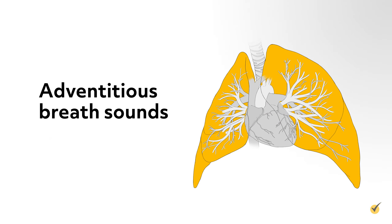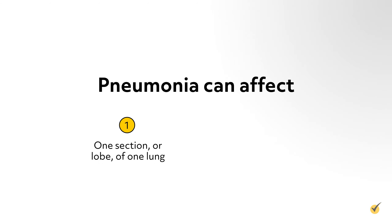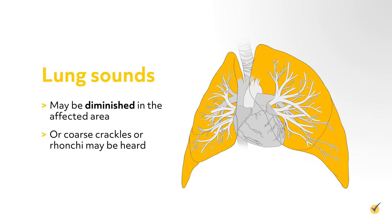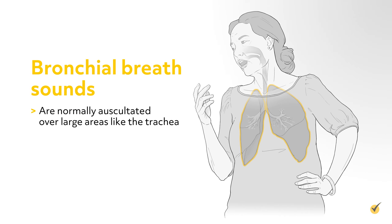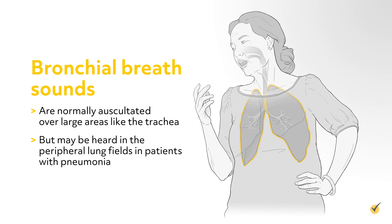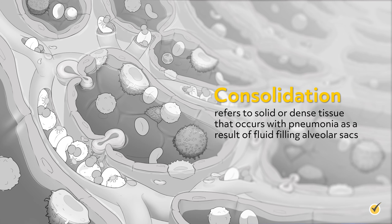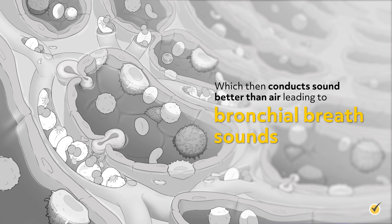Adventitious breath sounds may be auscultated in patients with pneumonia. Pneumonia can affect just one section or lobe of one lung, or multiple lobes of one or both lungs. Lung sounds may be diminished in the affected area, or coarse crackles or ronchi may be heard. Bronchial breath sounds are normally auscultated over large areas like the trachea, but may be heard in the peripheral lung fields in patients with pneumonia. Consolidation refers to solid or dense tissue that results from fluid-filled alveolar sacs, which conduct sound better than air, leading to bronchial breath sounds.